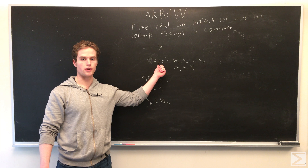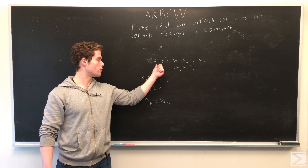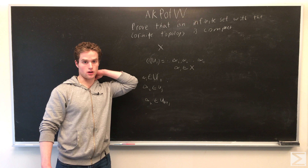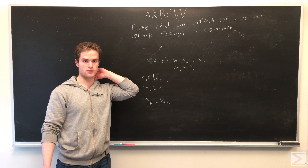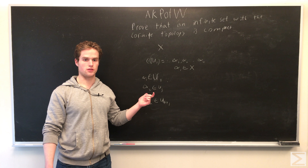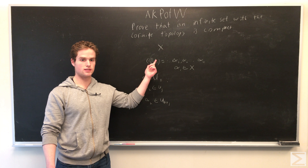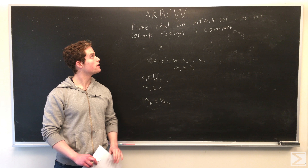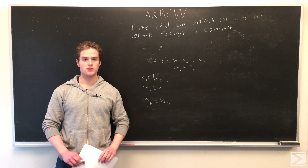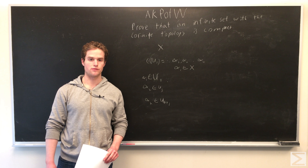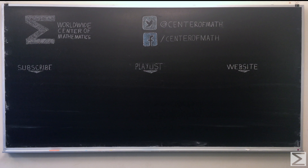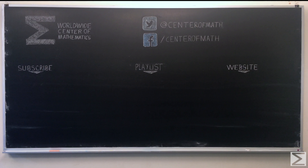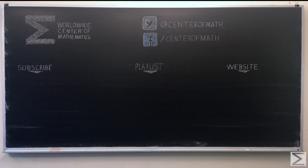Because all our open sets cover X, we know each element not in U1 is in some other open set. So for our finite set of members of X not in U1, we can find other open sets — part of our original cover — U2, U3, all the way to U_{k+1}, such that each of these contains the rest of the members not in U1.